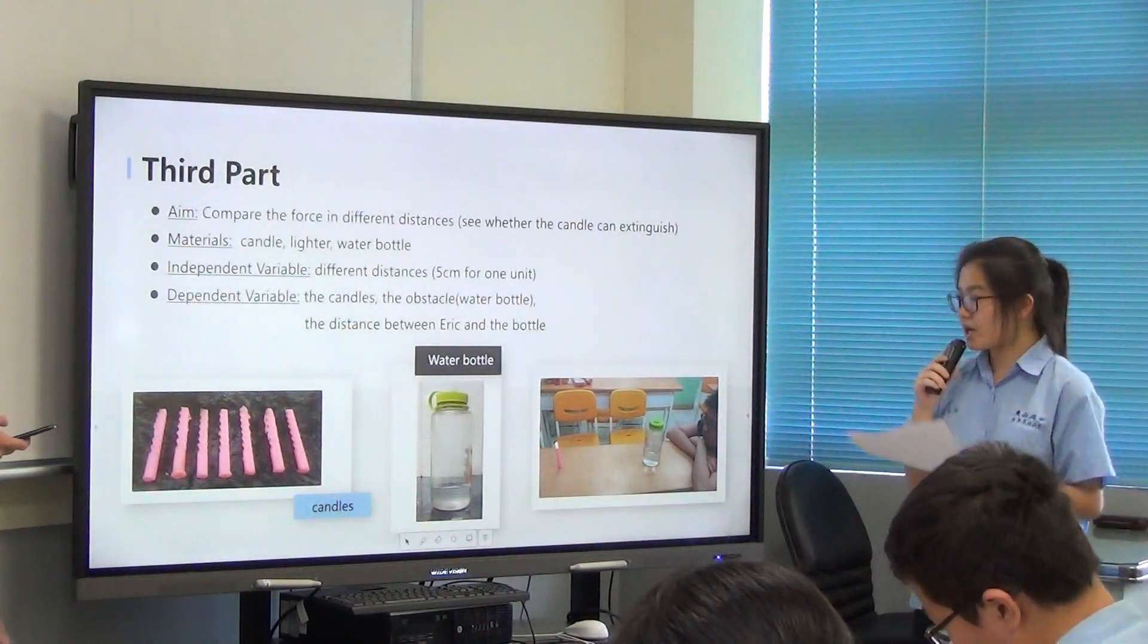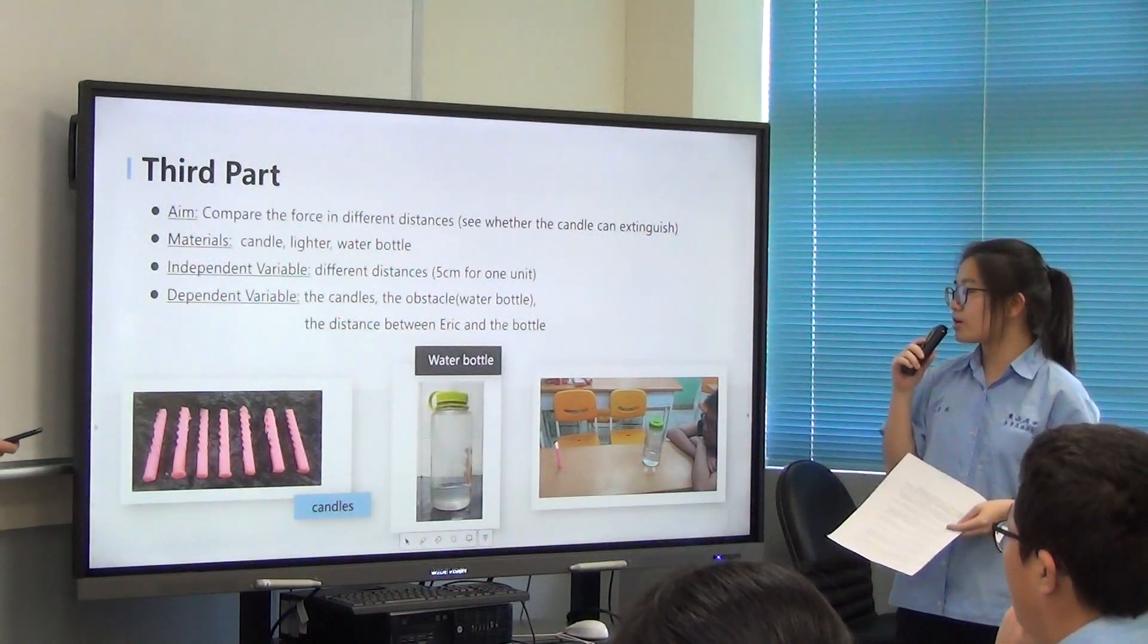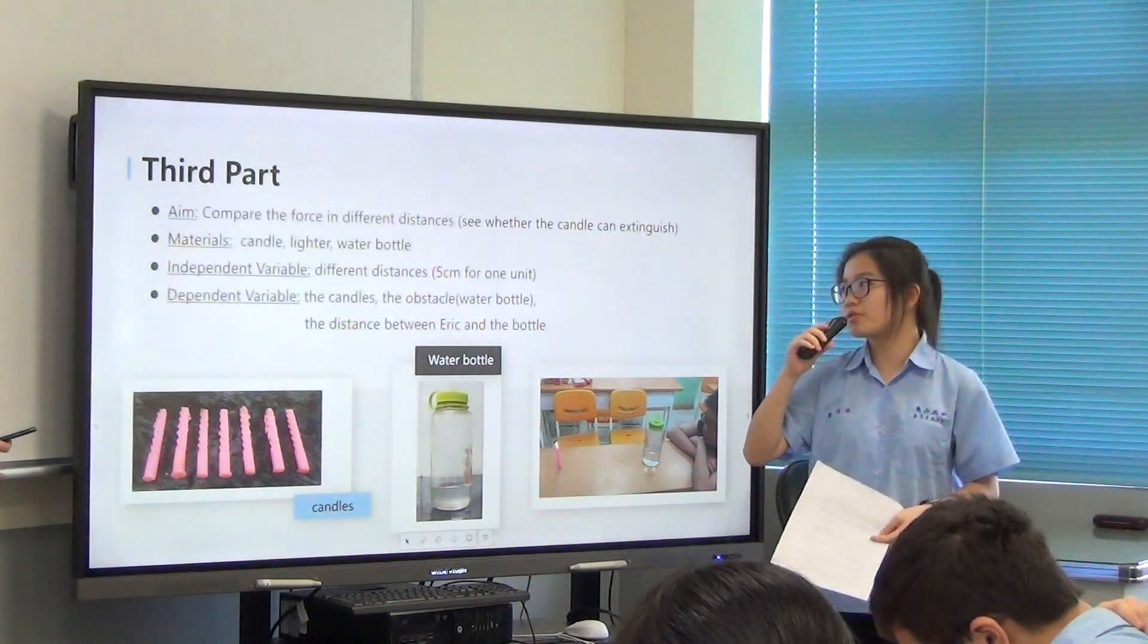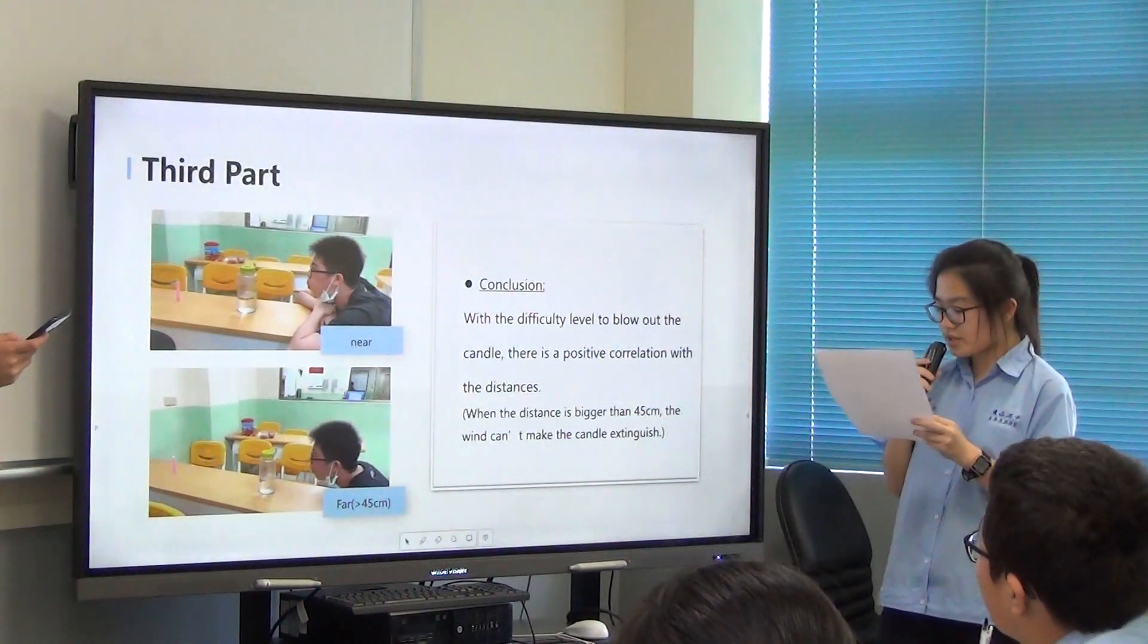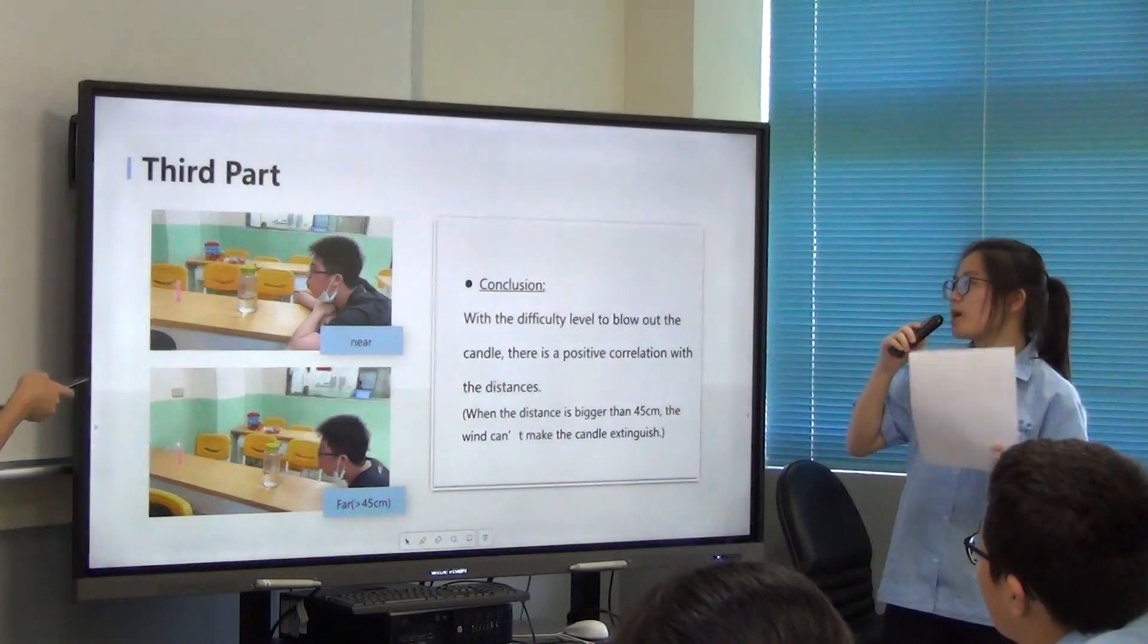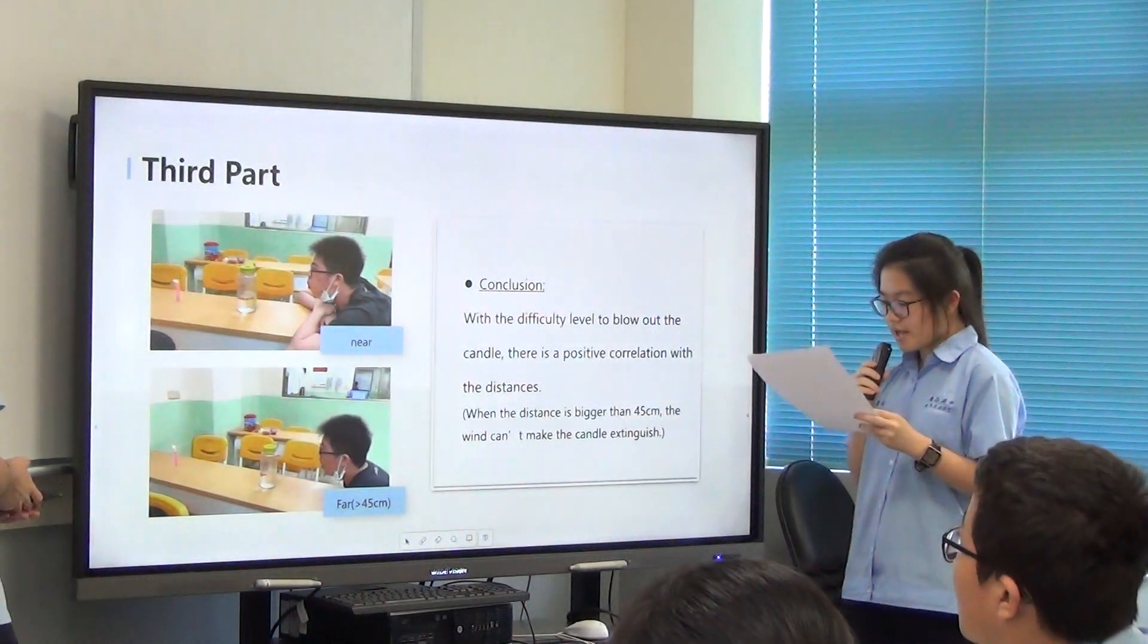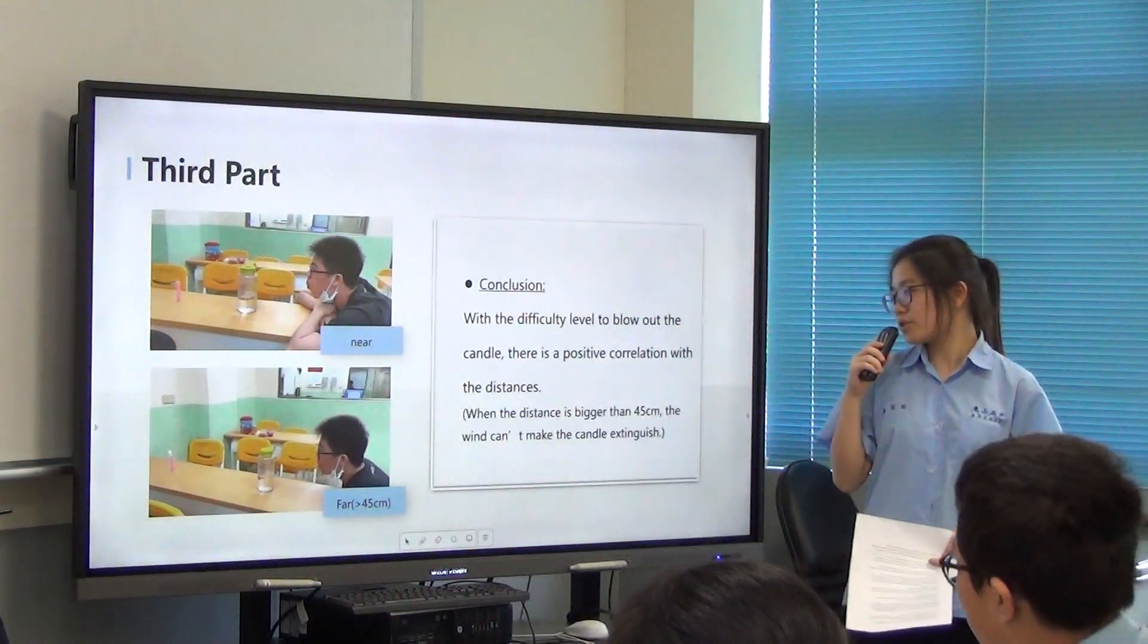In the third part of the experiment, we compare in different distances. We chose the water bottle to be our obstacle, and the independent variable is the distance, and we will add it like 5 centimeters for one unit. We found that the difficulty level to blow a candle, there is a positive correlation with the distance, which means that if the candle is further, it will be harder to blow it out. And we realized when the distance is bigger than 45 centimeters, the wind can make the candle extinguished.